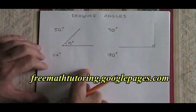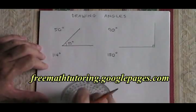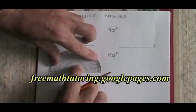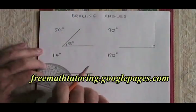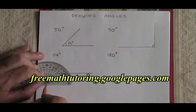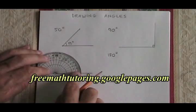Some angles you are asked to draw are bigger than 90 though. What do you do? Well, start with a straight line. Put your vertex of your protractor, the zero dot, on one end of the line.